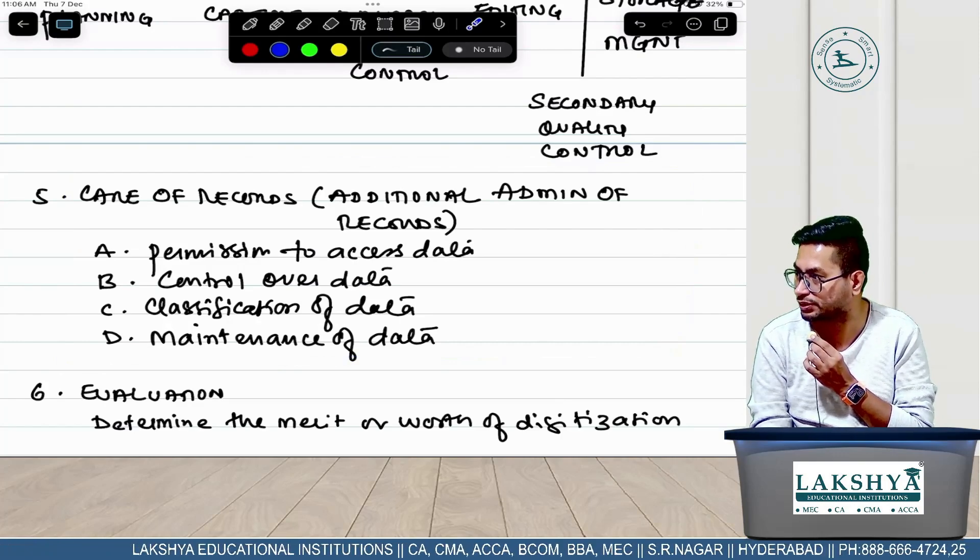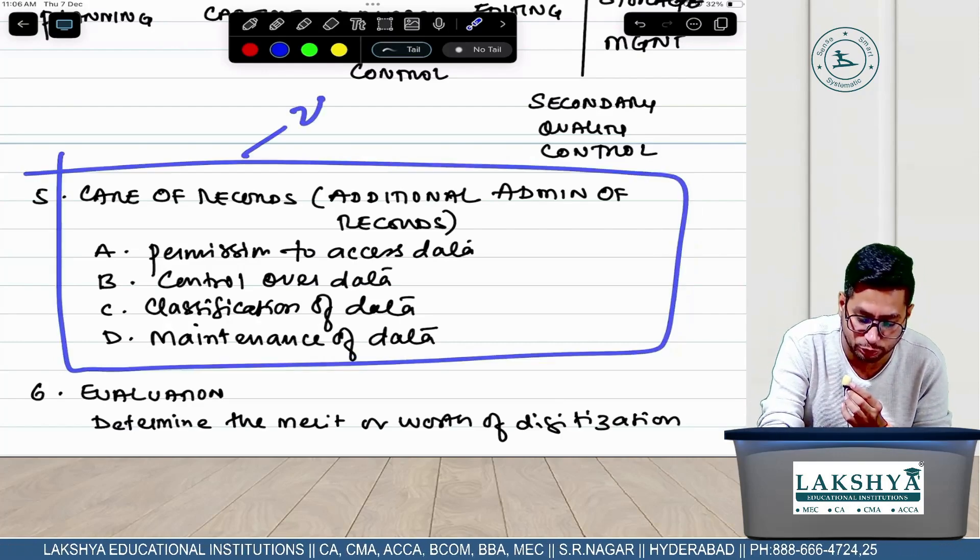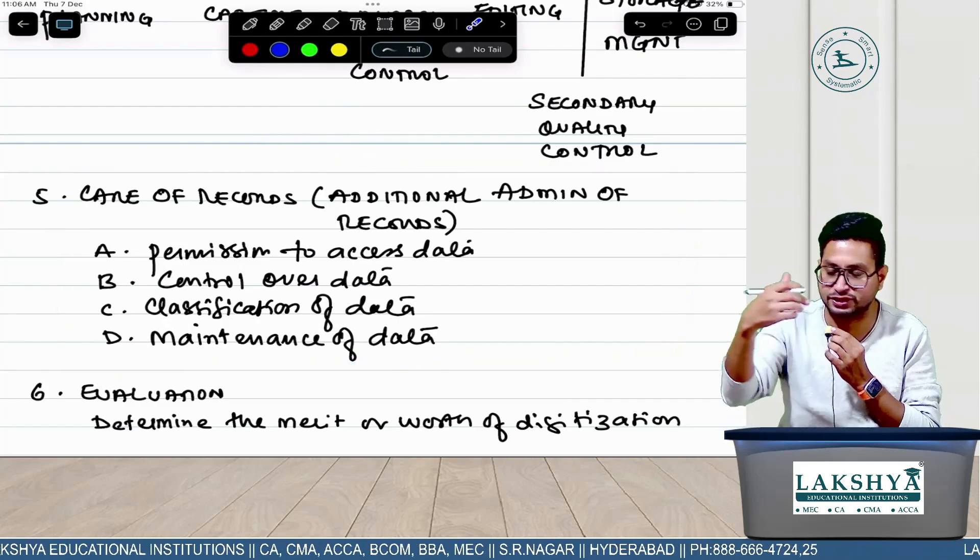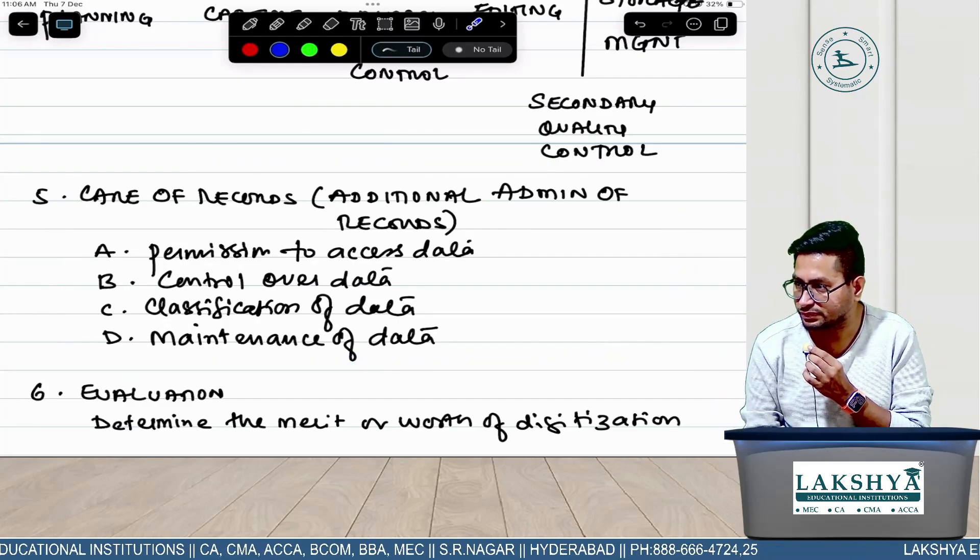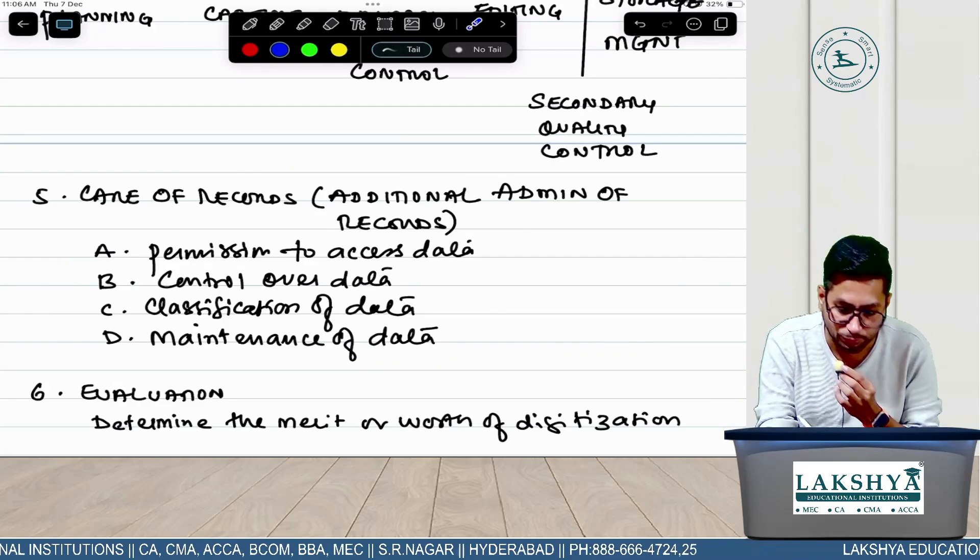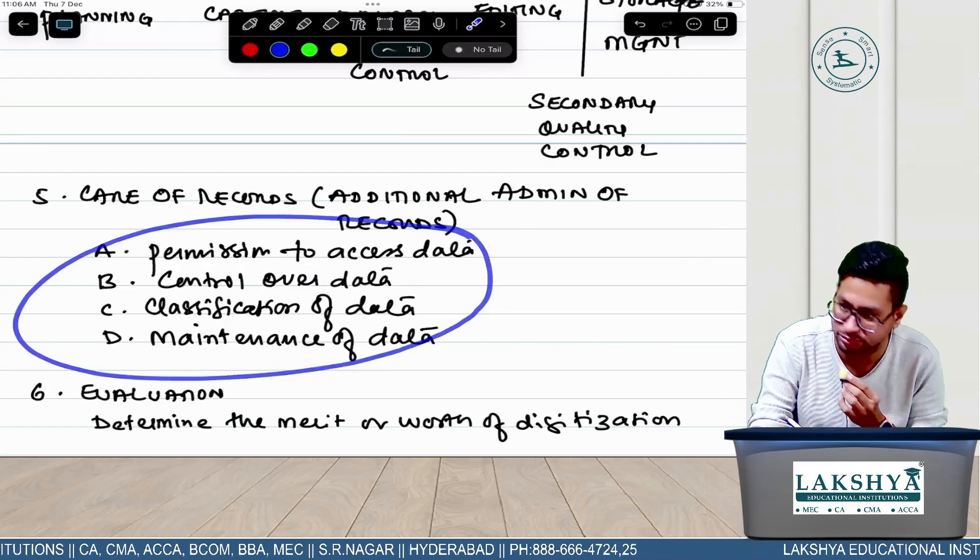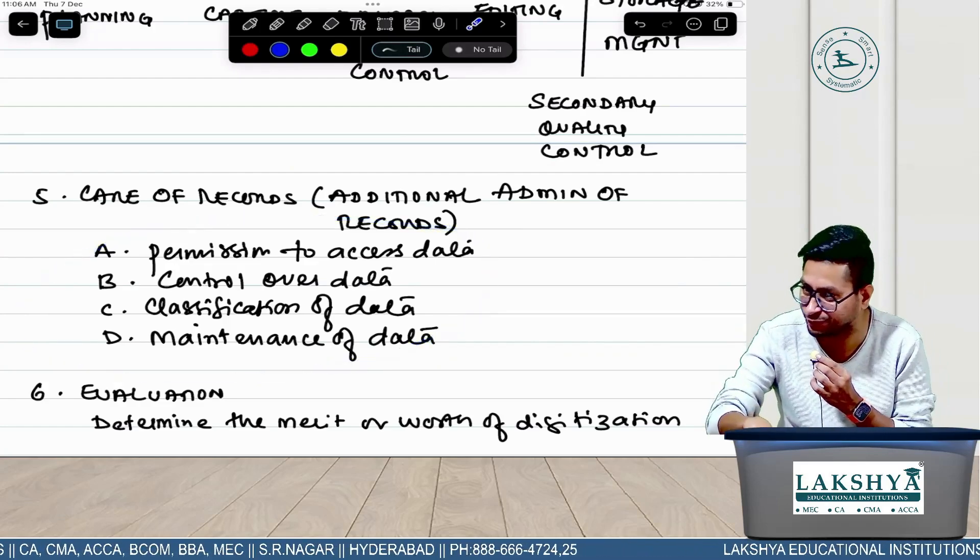But write everything and come - don't skip anything. Write all subheadings. Sometimes, like in subheadings, there's one small point about 'care of records' which I told is important. This point they can ask for two marks separately - explain about care of records.